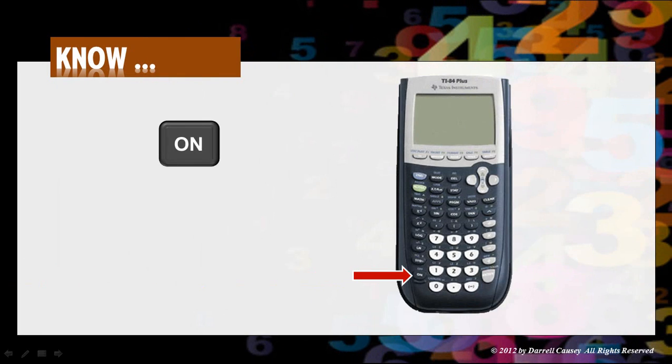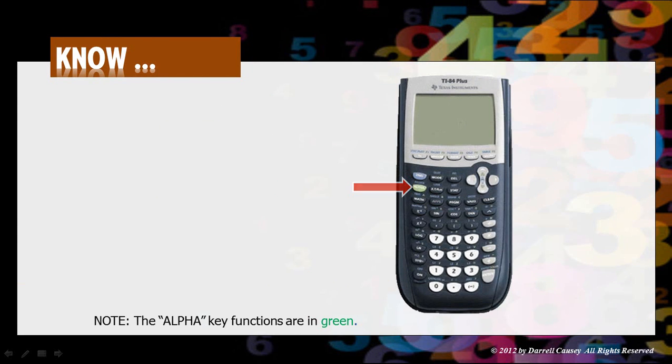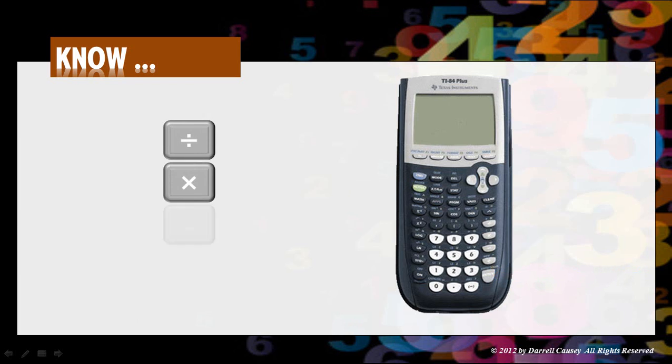There's the on button. The second button which makes all the blue functions work. And then the alpha or the green button which makes all the green functions work, especially the alphabet. Our enter key down at the right bottom. And then our function keys over on the right. Very important.